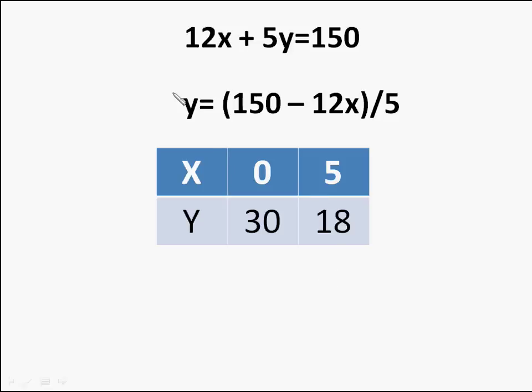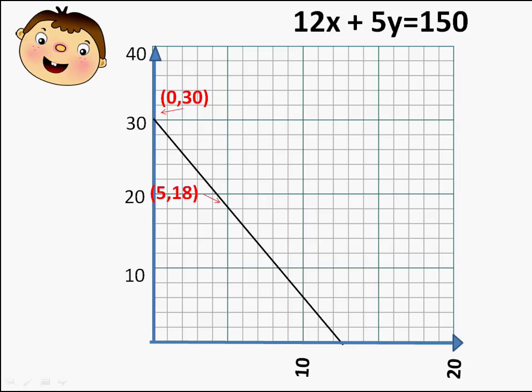So we got two points for the graph. So we plot a graph with x and y axis. If we join these points we get a straight line. So graph of linear equations of two variables would be a straight line.